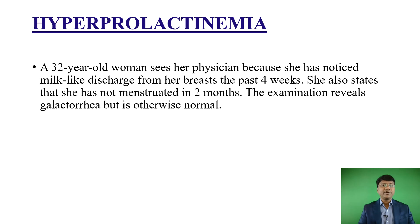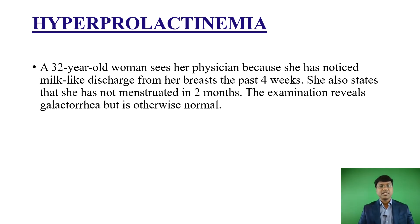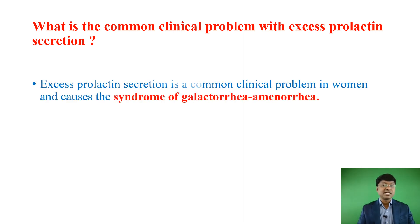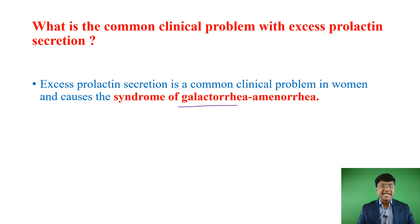In this session, I'll be discussing about hyperprolactinemia or prolactinoma in a nutshell. The common clinical problems with excess prolactin secretion are: number one, excessive milk production — called galacturia — and number two, absence of menstruation — called amenorrhea. These are the common clinical problems in women with excess prolactin secretion.